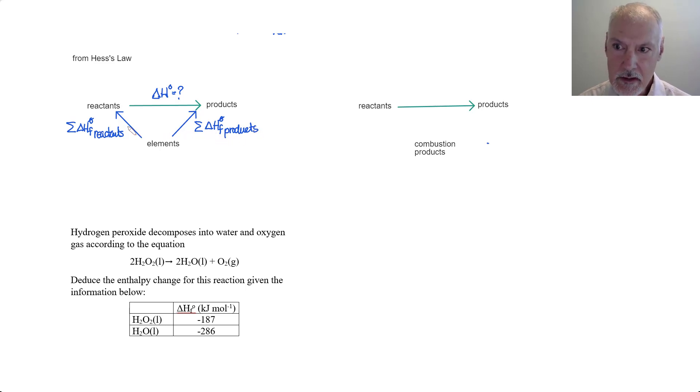Hess's law states that to determine the enthalpy change for a reaction it's independent of the path. Let's go from reactants to our elements and then from our elements to our products. This line here is going in the wrong direction, so we need the reverse of that line. This then becomes a negative quantity. That gives us this relationship: we can predict the enthalpy change by taking the products minus our reactants.